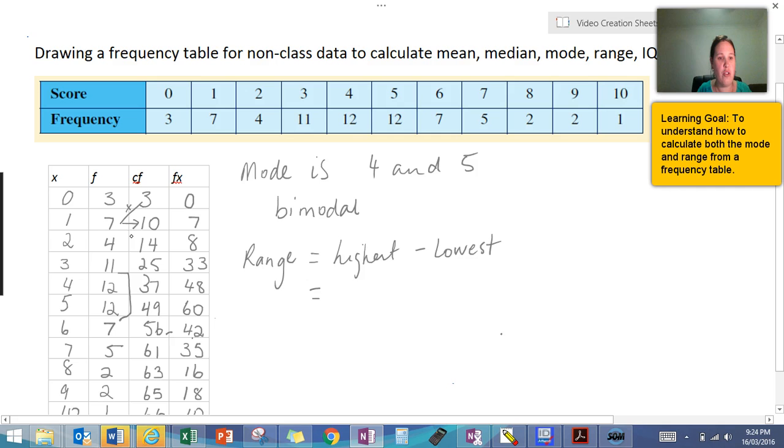And we just go to our x column to find that. So our highest value for this piece was 10, and you could get that from the previous one. So our highest score was 10 minus 0. So therefore, our actual range is going to be 10.